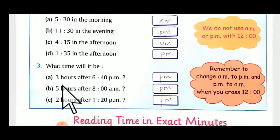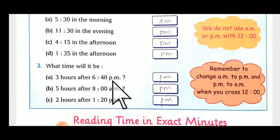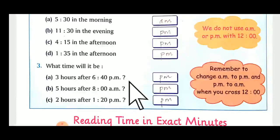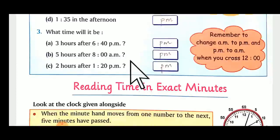What time will it be three hours after six forty PM? Six plus three — it will be nine forty, nine forty PM. Five hours after eight AM: five added after eight — nine, ten, eleven, twelve, and one o'clock — it becomes one o'clock PM.